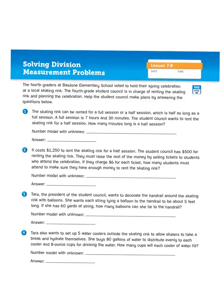Let's look at problem number one. The skating rink can be rented for a full session or a half session, which is half as long as a full session. A full session is 7 hours and 30 minutes. The student council wants to rent the skating rink for a half session. How many minutes long is a half session? So there's a couple of parts to this problem. The first thing is we need to figure out how many minutes a full session is, and then determine how many minutes a half session would be.